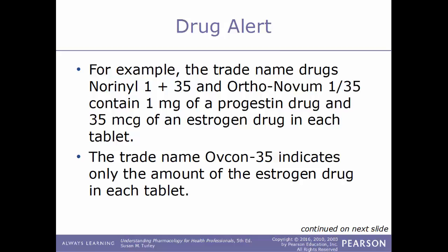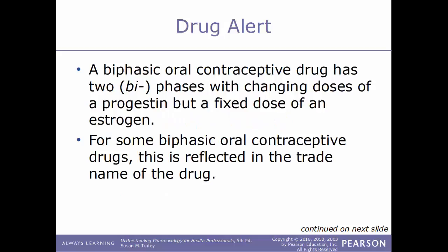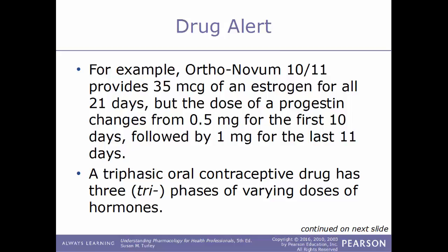A biphasic oral contraceptive drug has two phases with a changing dose of progestin but a fixed dose of estrogen. For example, Ortho-Novum 10/11 provides 35 micrograms of estrogen for all 21 days, but the dose of progestin changes from 0.5 milligrams for the first 10 days followed by 1 milligram for the last 11 days.